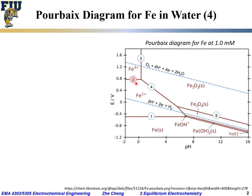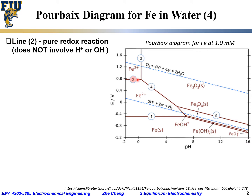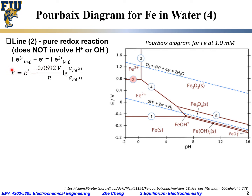Now let's look at Line 2 — another horizontal line, parallel to the horizontal axis. We call it Line 2, and it is also a pure redox reaction that does not involve a proton or hydroxyl group. Line 2 separates Fe³⁺ on the top (more positive potential) from Fe²⁺ at the bottom (more negative potential). The half-cell reaction is: Fe³⁺ + e⁻ → Fe²⁺.